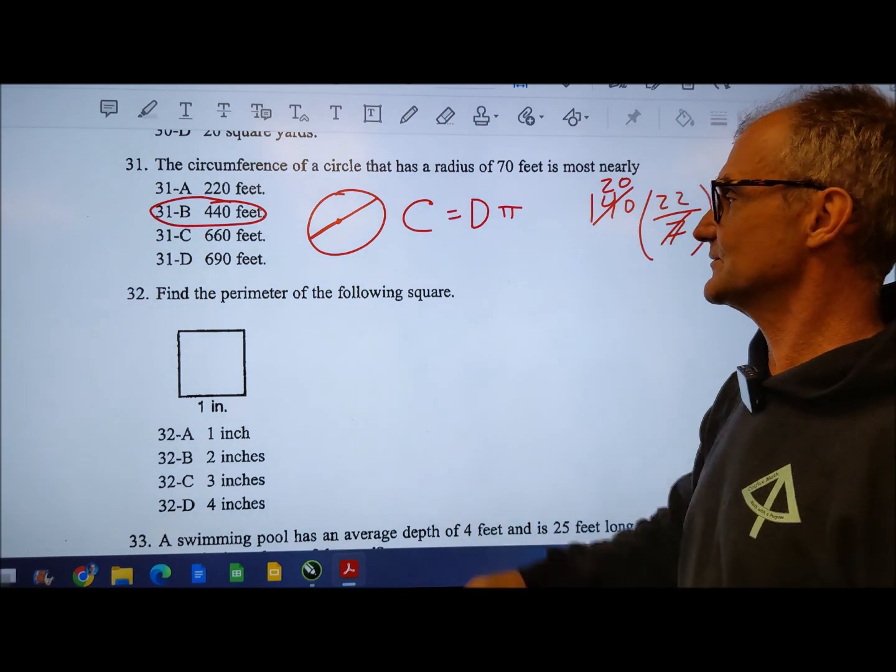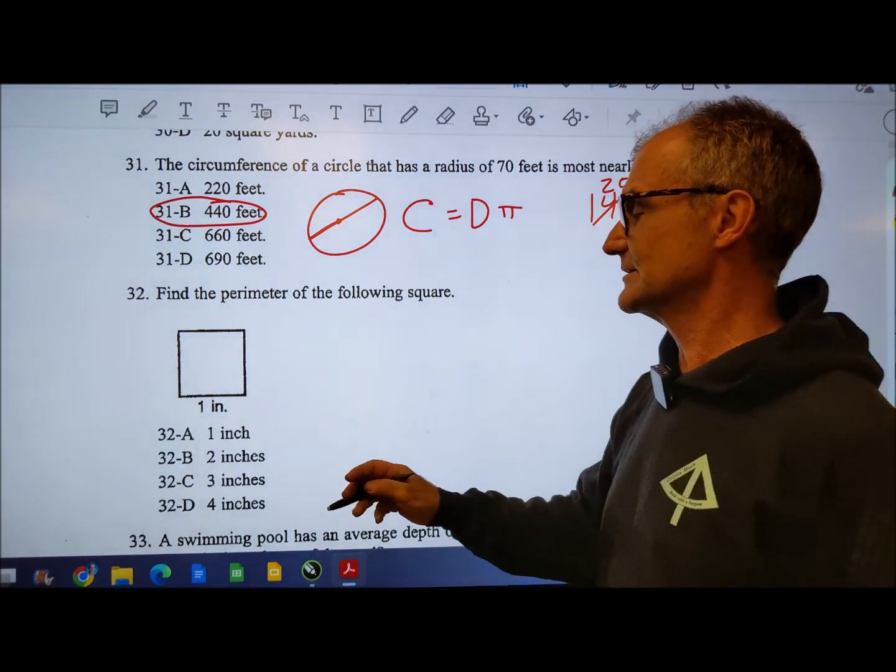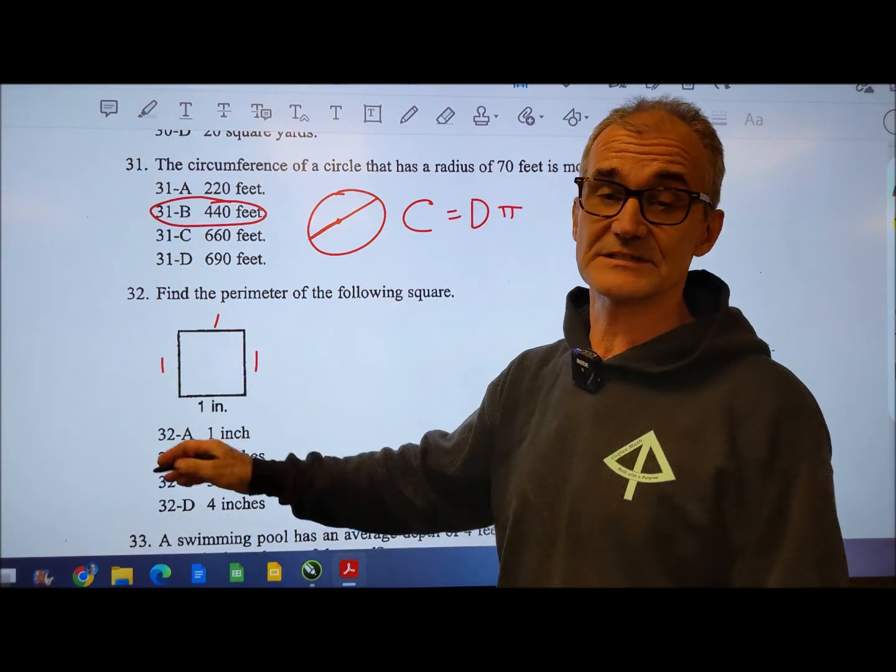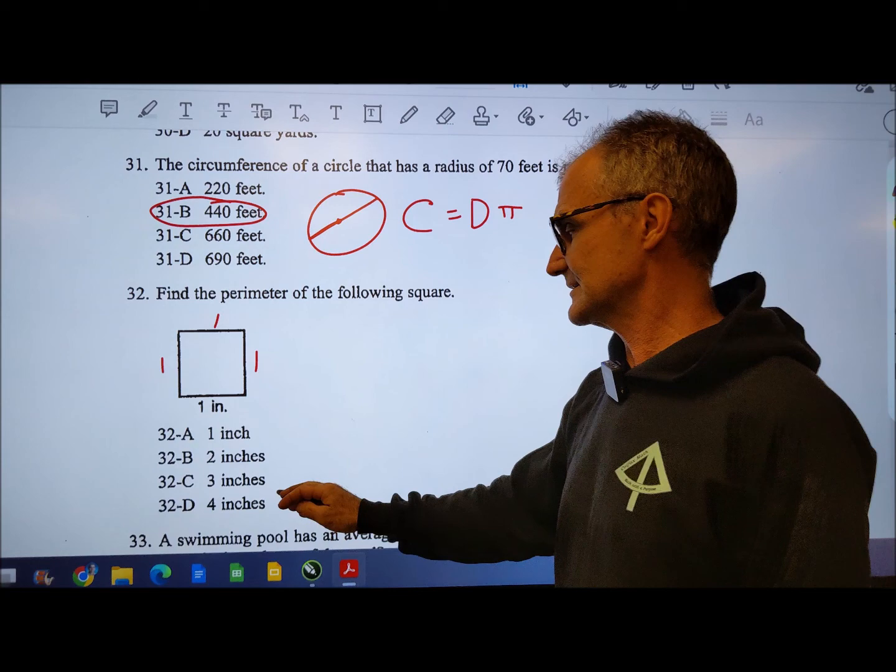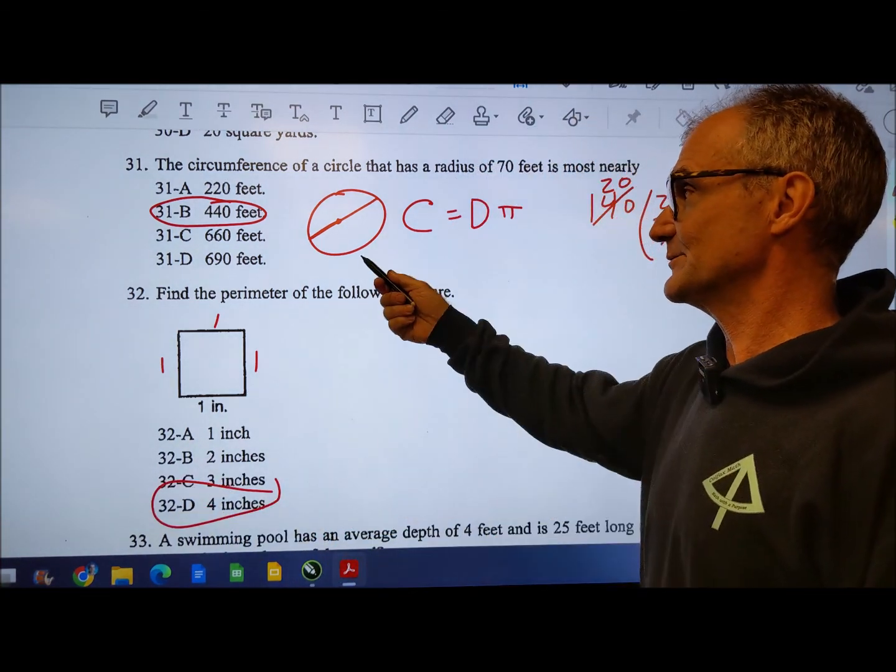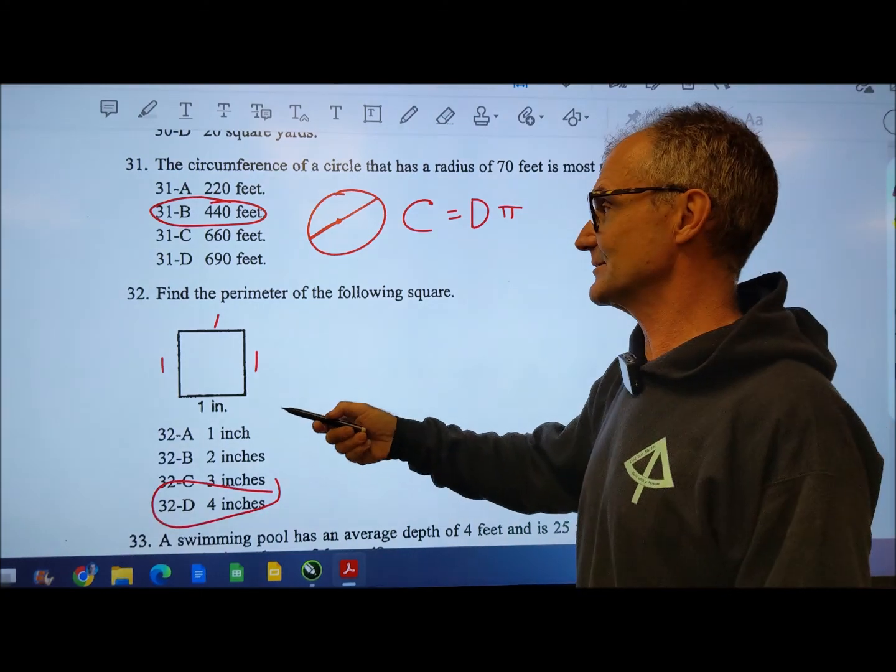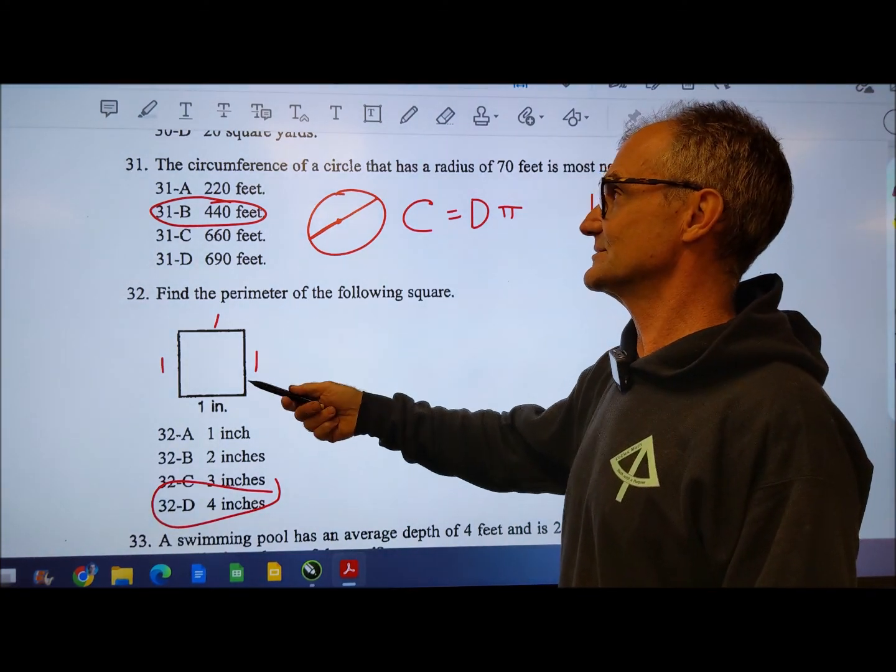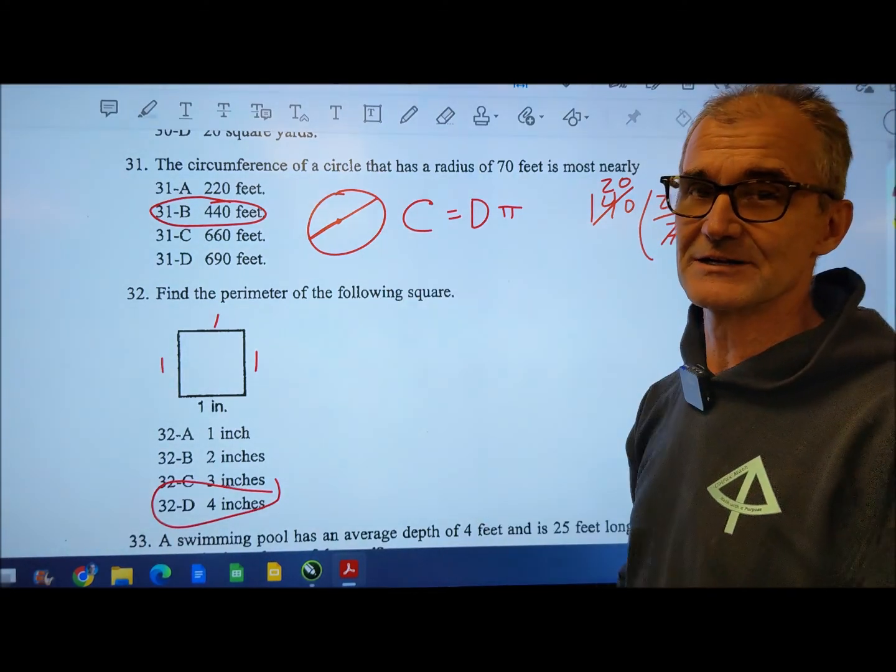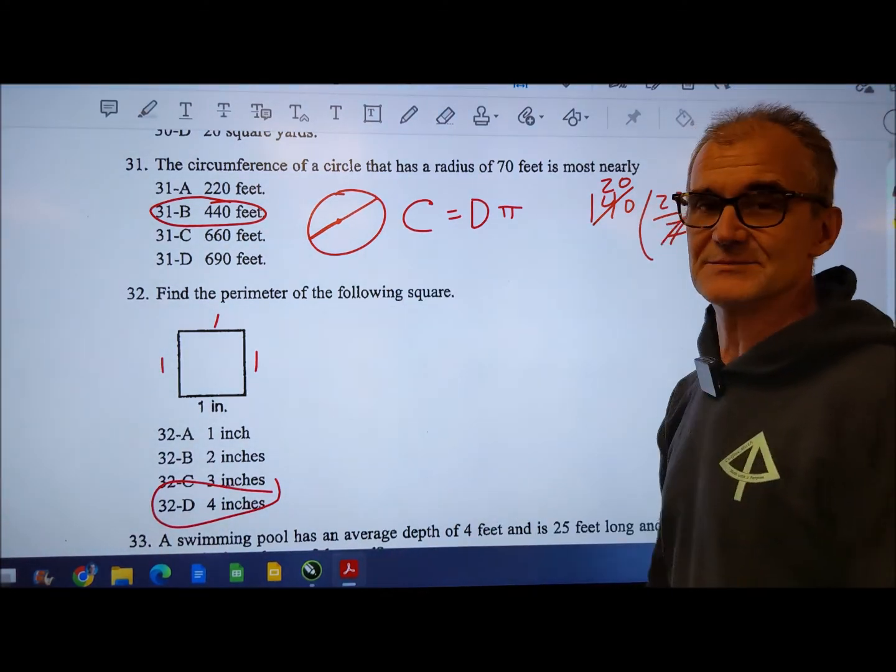Number 32, find the perimeter of the following square. So square has all equal sides. If that's one, one, one, and one. Perimeter is the distance around the outside. Correct answer is four inches. A problem as well, like the previous ones, a lot about vocabulary. Do you know what perimeter is versus area? Do you know circumference equation for circumference radius diameter? A lot of vocab in these math problems.